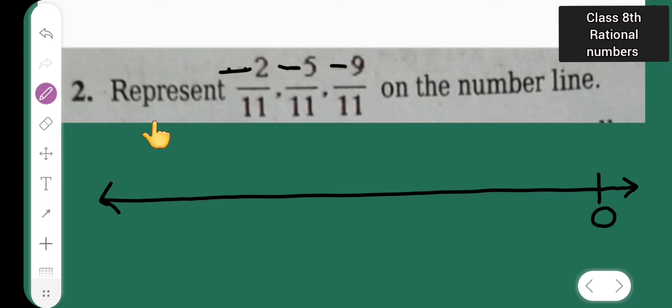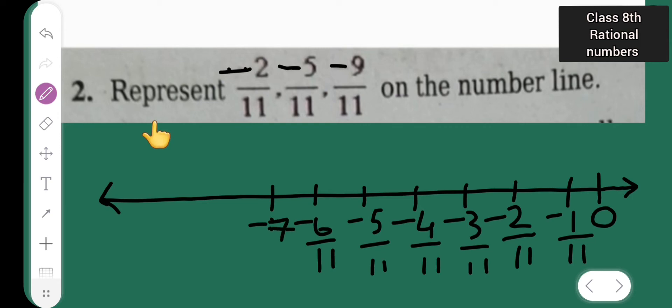So this is my 0, this is -1/11, -2/11, -3/11, -4/11, -5/11, -6/11, -7/11, -8/11, -9/11.